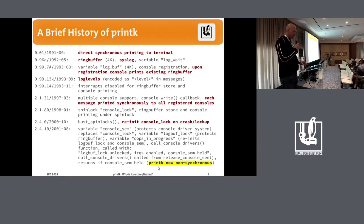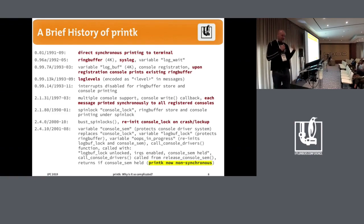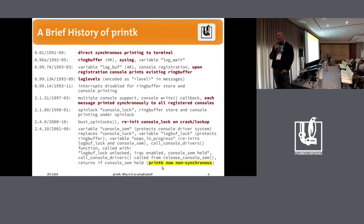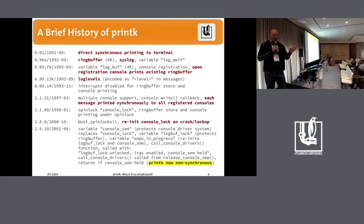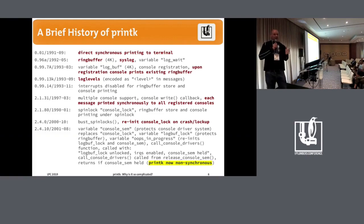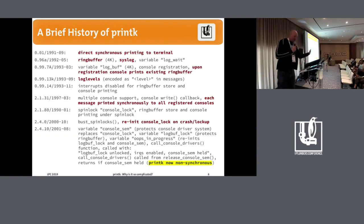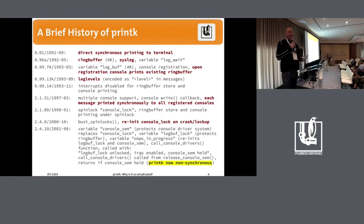That 2.4 patch is pretty much what printk looks like now — a significant overhaul that still exists today. Most importantly, this was the moment where printk became non-synchronous: rather than printing synchronously to every console for each printk call, if someone else is already printing, they'll print your message too. This meant printk could go really fast if someone else is doing the printing — but if you're the one doing the printing and everyone starts calling printk, you have a lot of work ahead of you.